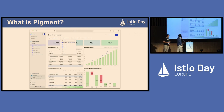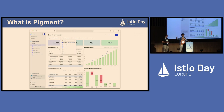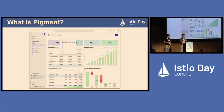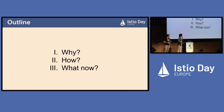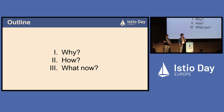Pigment is a web application that stores user data. Users can import their data, transform it, visualize it, and make business decisions based on that. This talk will cover why we set up global request routing to achieve seamless data locality, how we did it, and some next steps we see in the near future.